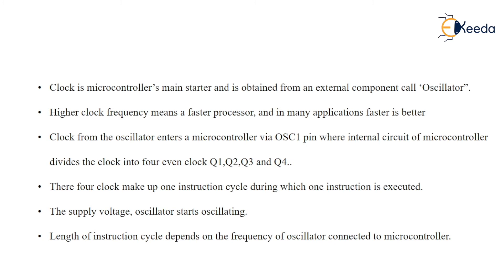Higher clock frequency means a faster processor, and in many applications faster is better. In the microcontroller datasheet, crystal frequency and clock frequency values are given. As you increase the clock frequency, time is reduced — they are inversely proportional to each other. If you choose a higher crystal frequency, the microcontroller will react faster, but it also requires more power consumption.